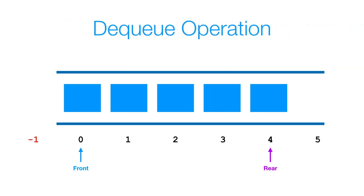Now let's look at the dequeue operation. There are two ways we can think about this: we can be more time efficient and less space efficient, or more space efficient and less time efficient. If we go with the more space efficient route, every time we remove an element from the front of our queue, we shift the remaining elements to the left. So every time we remove a single element, it will be O(n) time complexity. If we dequeue all elements, that results in O(n²) time complexity.